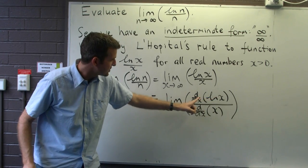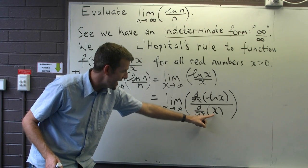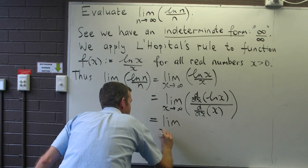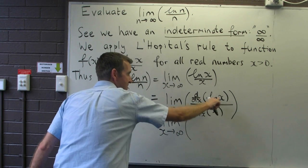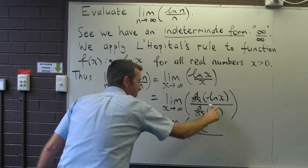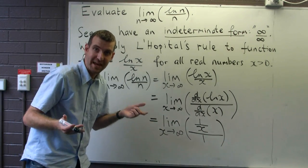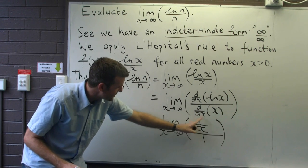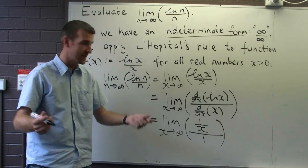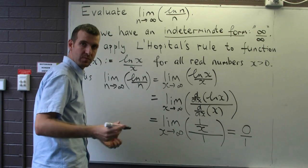We differentiate the top part: the derivative of ln(x) is just 1/x. The derivative of the bottom part is just 1. Now let's see if it's suitable to take our limit. The limit of 1/x as x approaches infinity is zero, and the limit of the constant 1 is just 1. So we can take our limit and we get zero over one, which is zero.